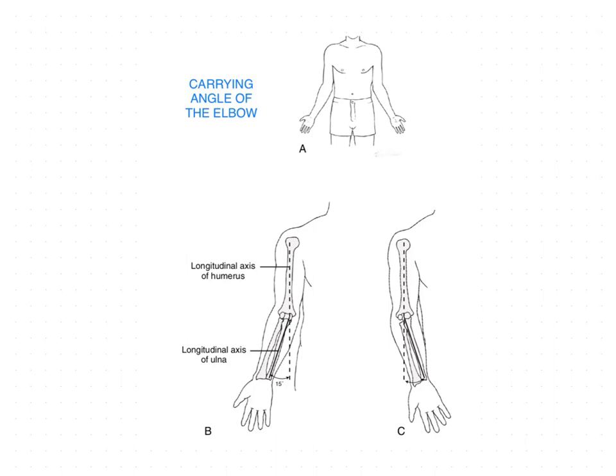Dear students, welcome back. In the previous session we finished the axis of motion of the elbow joint. Now in this session we are going to see the carrying angle of the elbow when the upper extremity is in anatomical position.